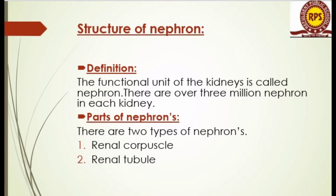Here we discuss some new things. The first is the structure of the nephron and its definition. The functional unit of the kidney is called the nephron. There are over three million nephrons in each kidney.